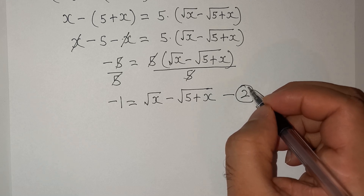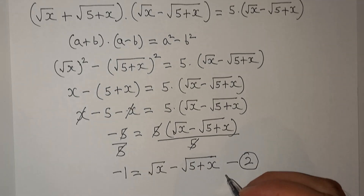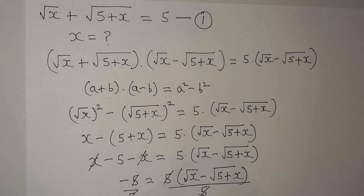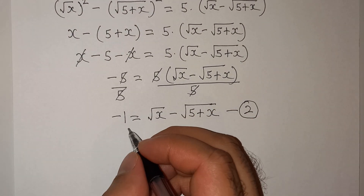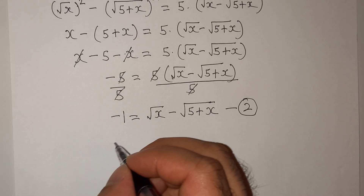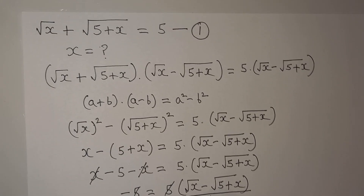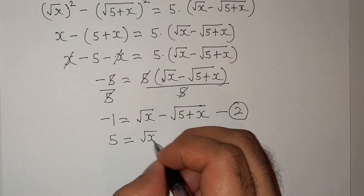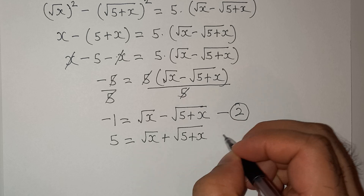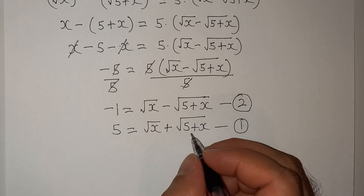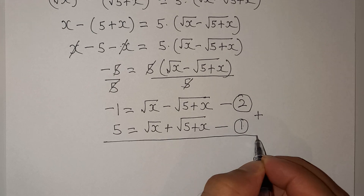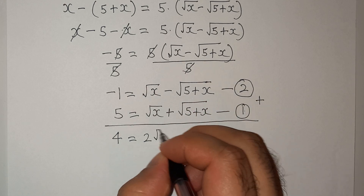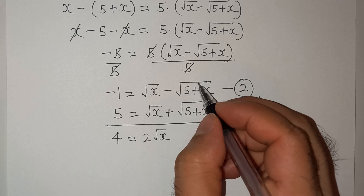Now I am going to add equation 1 and equation 2. Equation 1 is root(x) + root(5 + x) = 5, and equation 2 is -1 = root(x) - root(5 + x). Adding them: 5 + (-1) = 4, and root(x) + root(x) = 2·root(x), while the root(5 + x) terms cancel each other out.